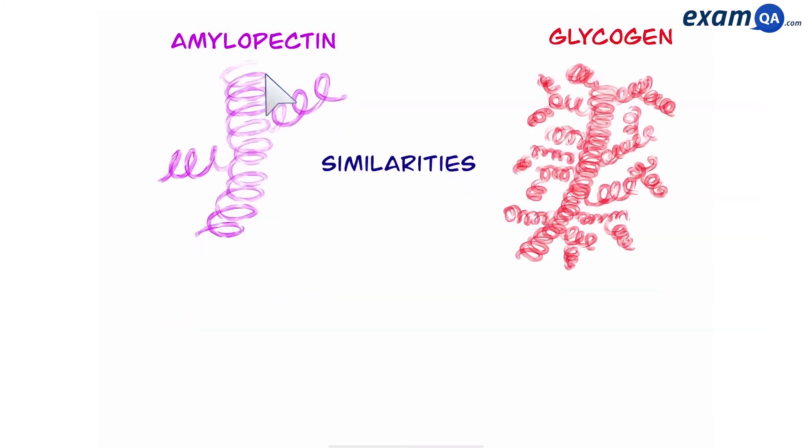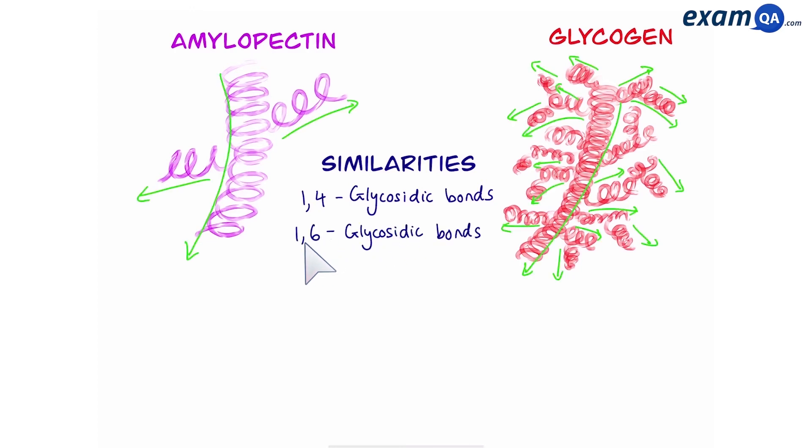Okay so let's look at amylopectin and glycogen and compare some similarities. First of all they both have 1-4 glycosidic bonds. This is responsible for making the straight chain. They also have 1-6 glycosidic bonds which are found at the branch points. Of course glycogen has way more branches so it has much more 1-6 glycosidic bonds. Also they are both made of only alpha glucose.